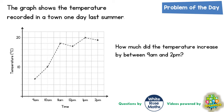Welcome, problem solving fans, to another problem of the day. This one is all about how the temperature in a town changes throughout one day last summer. The question is: how much did the temperature increase by between 9am and 2pm?